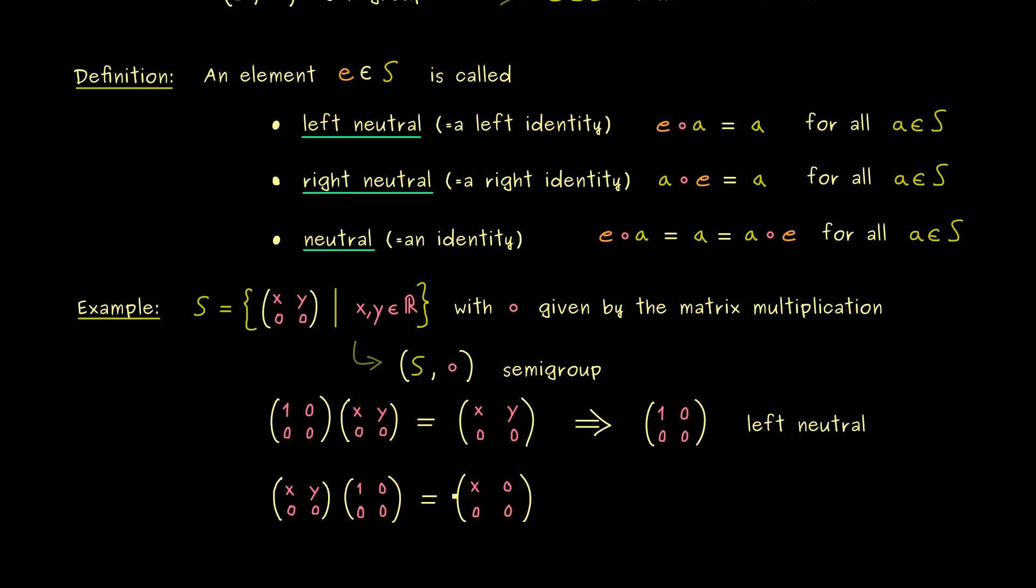In fact we can simply write down an example where we just put in 2's for x and y and then we see this is not the same matrix again. And this is the counter example we want. We don't have this equality here for every element A in S. So it's not a right identity but still a left identity. So this can definitely happen.